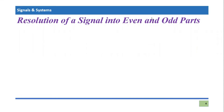Bismillahirrahmanirrahim, Assalamu Alaikum everyone. We are going to continue our discussion about 'neither' signals. In the last video tutorial, we discussed that there is a third category of signal in even and odd categorization — a signal which is neither even nor odd. We understood that such signals are a composition of two